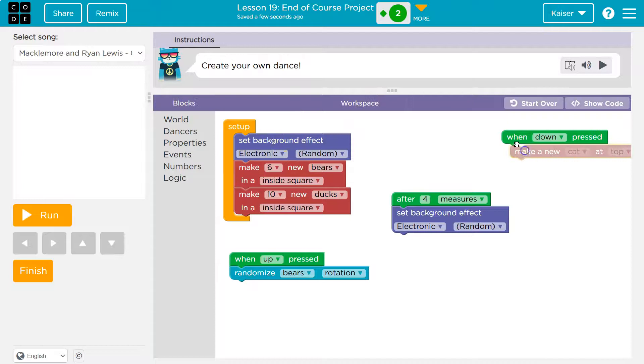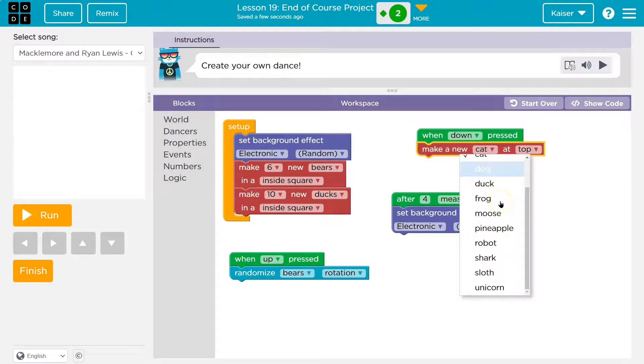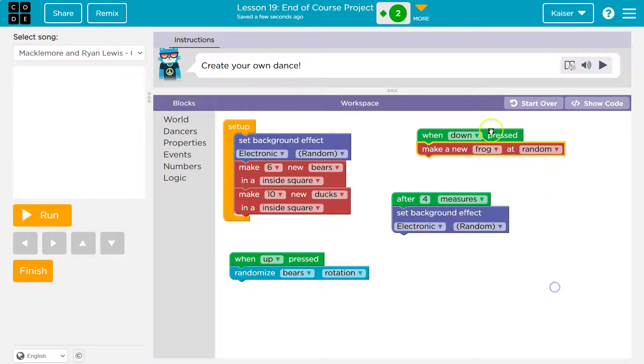And then, for down, dancers make new. Every time I hit down, I'm going to make a new frog somewhere random.